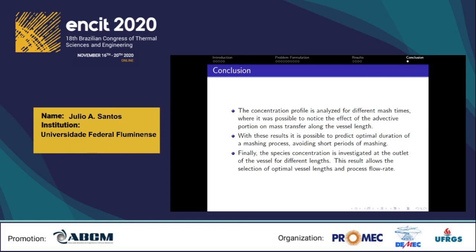In conclusion, the concentration profile was analyzed for different mash times, where it was possible to notice the effect of the advective portion of mass transfer along the vessel length. With these results, it is possible to predict the optimal duration of a mashing process, avoiding short periods of mashing which could lead to incomplete starch conversion and inefficient wort production. Additionally, the species concentration was investigated at the outlet of the vessel for different lengths, allowing the selection of optimal vessel lengths and process flow rate, which naturally influences the effect of advective mass transfer and process efficiency.